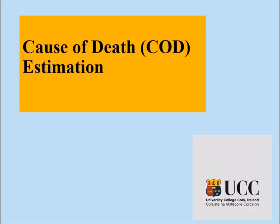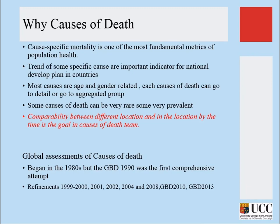I'm now moving to the different estimation procedures, giving an example at each step. Causes of death — why do we want to know about them? Cause of death is a fundamental matrix of population health. Even in normal life, if someone tells you their friend died yesterday, the first question you ask is: what happened? So that is a population metric in itself — you want to know what caused that death.